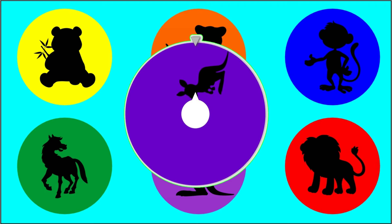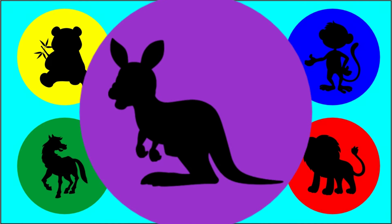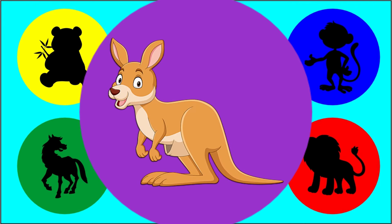Now we have the last circle with purple color. Let's see what animal is in the purple circle. Do you know what animal this is? Kangaroo. This is a kangaroo — animals from Australia. Have you seen it? Let's see the video.